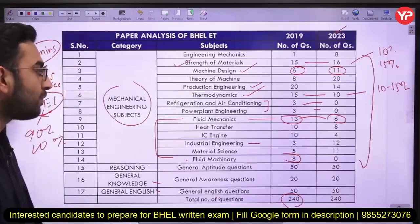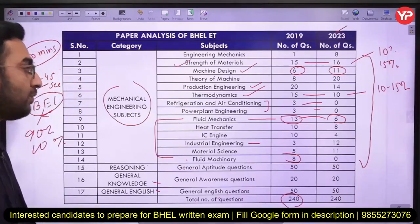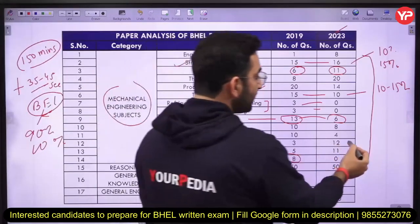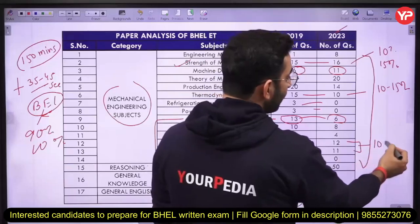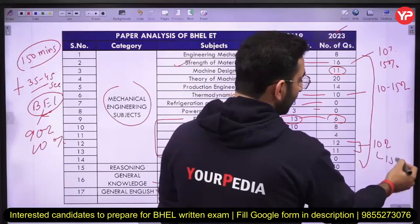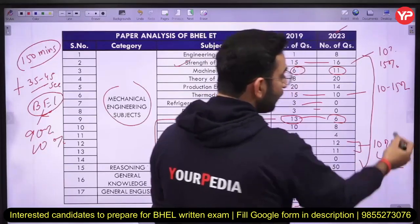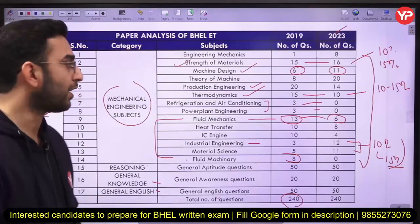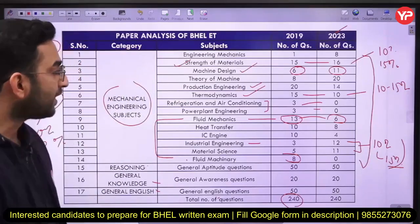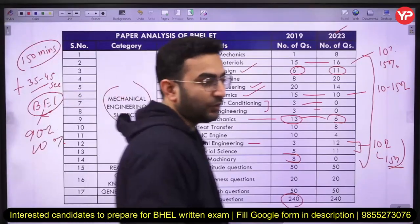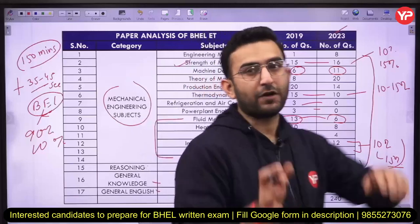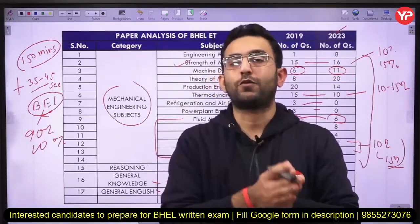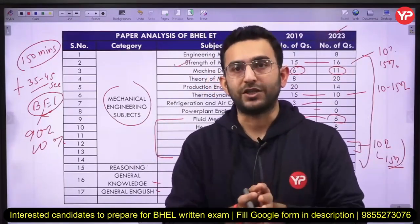Material science is also notable — both industrial engineering and material science together comprise around 10 to 15% of the 120 questions. You have a very limited period of time right now, as you have opportunities for both BEL and BHEL exams.